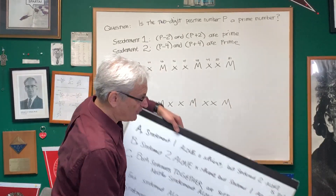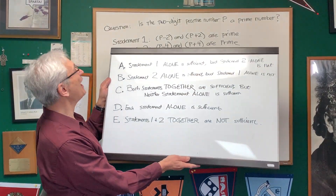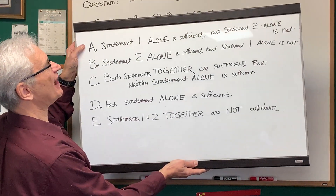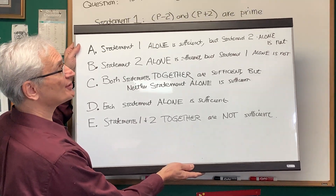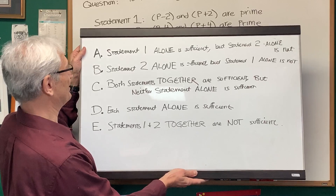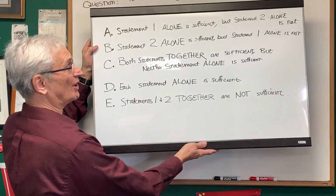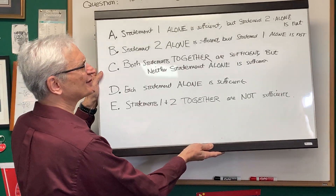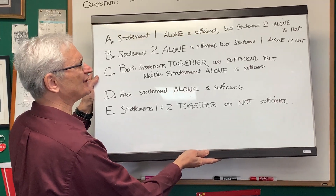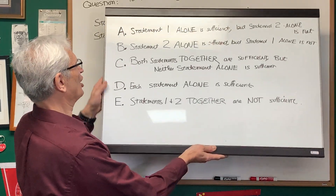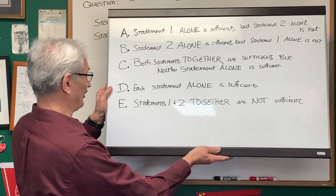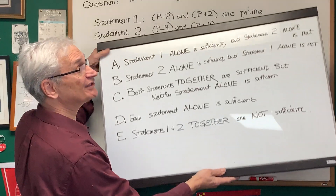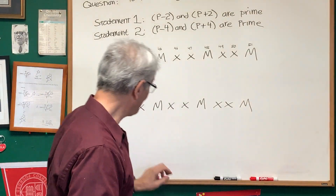This is the type of question called statement evaluation. You're given two statements and asked a question. Here are the choices: Choice A, statement one alone is sufficient to answer the question, but statement two alone is not. Choice B, statement two alone is sufficient, but statement one alone is not. Choice C, both statements together are sufficient, but neither statement alone is sufficient. Choice D, each statement alone is sufficient. And finally, Choice E, statements one and two together are not sufficient.